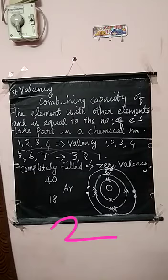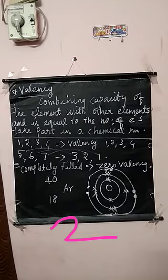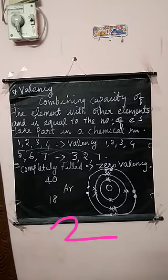I will explain with examples. The combining capacity of an element with other elements is valency. If the number of valence electrons is 1, 2, 3, or 4, the valency of that element is 1, 2, 3, or 4 respectively. To clarify: valence shell is the outermost shell; valence electrons are the number of electrons present in that outermost shell; and valency is the combining capacity of the element with other elements.